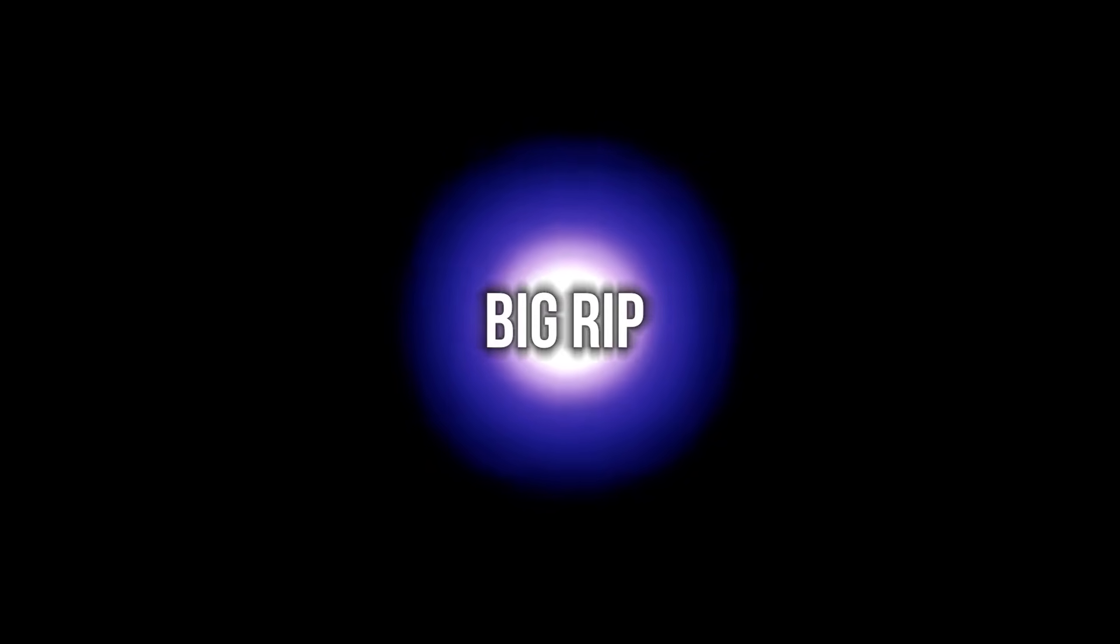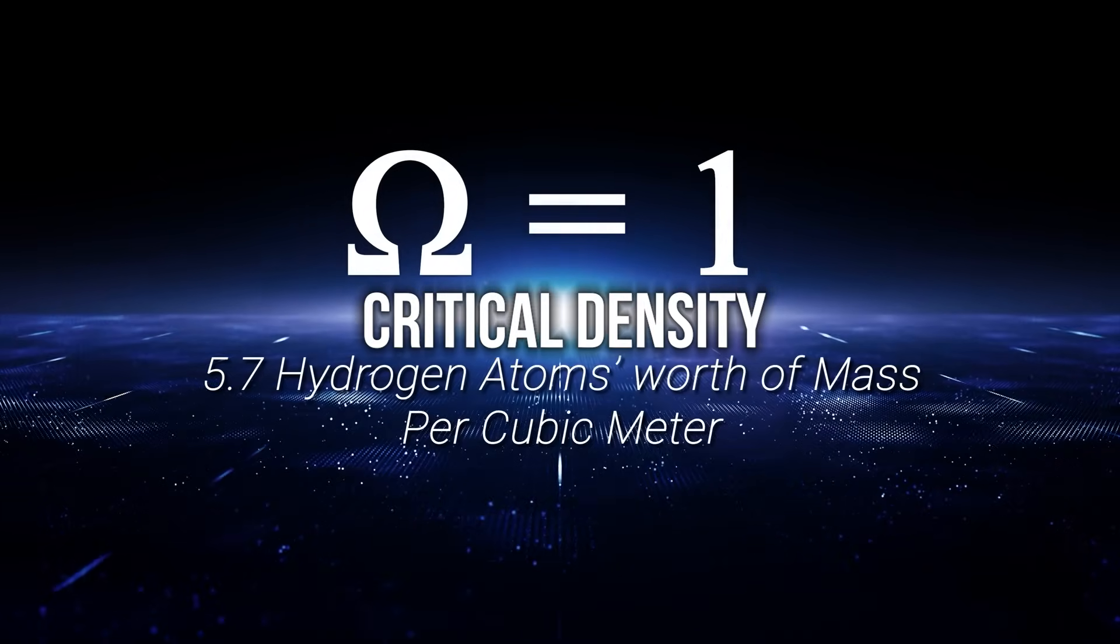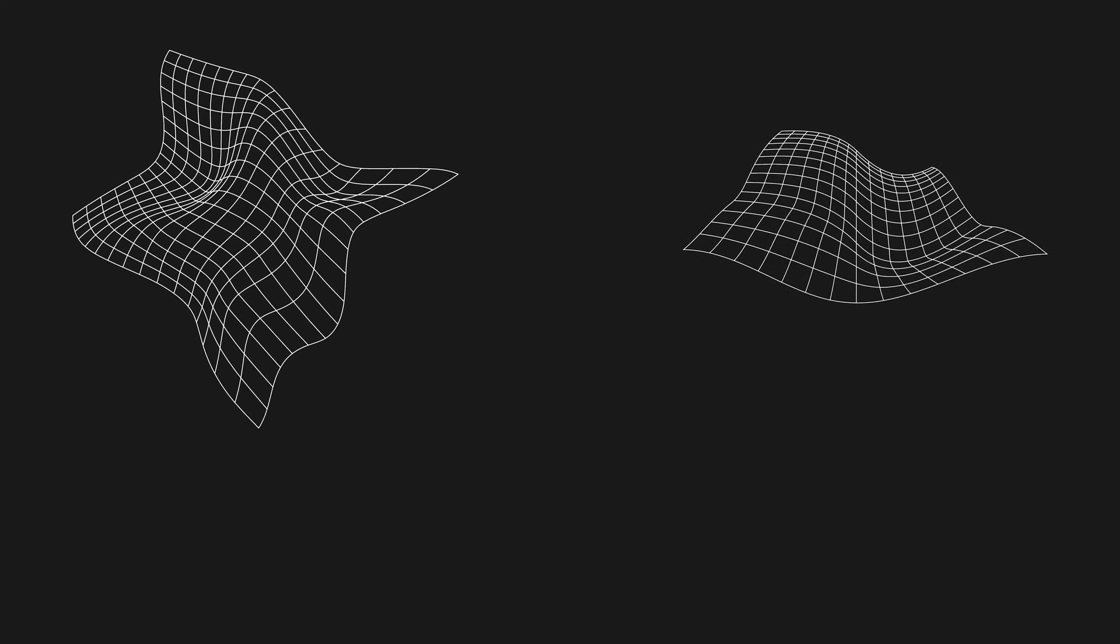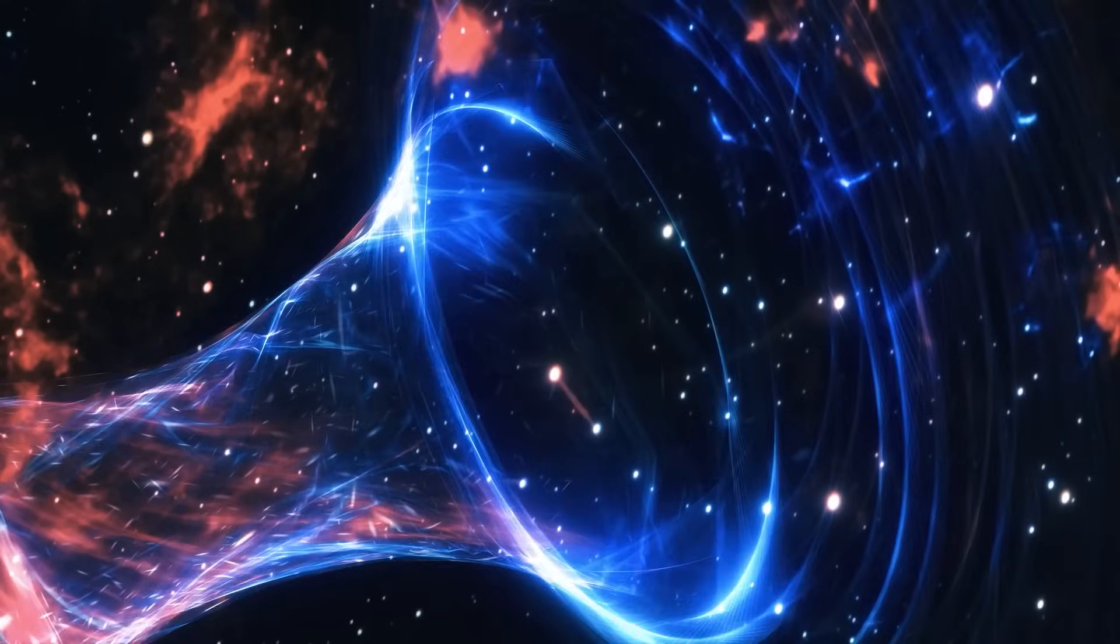This intriguing theory is known as the Big Rip. Whether or not it becomes a reality depends on a critical factor known as critical density, which serves as the boundary value distinguishing between open models that continue to expand forever and close models that eventually collapse.